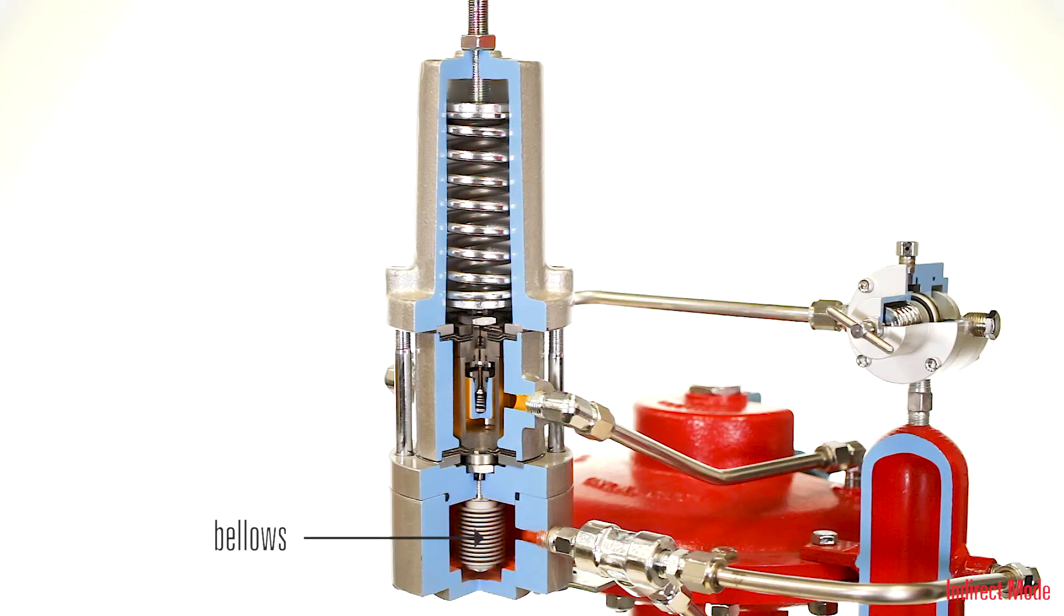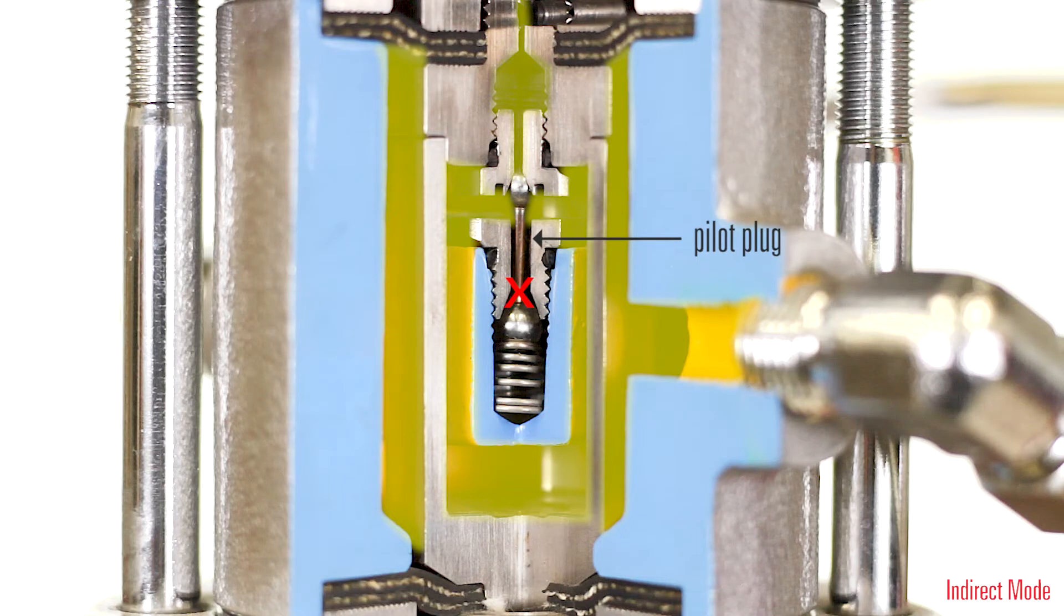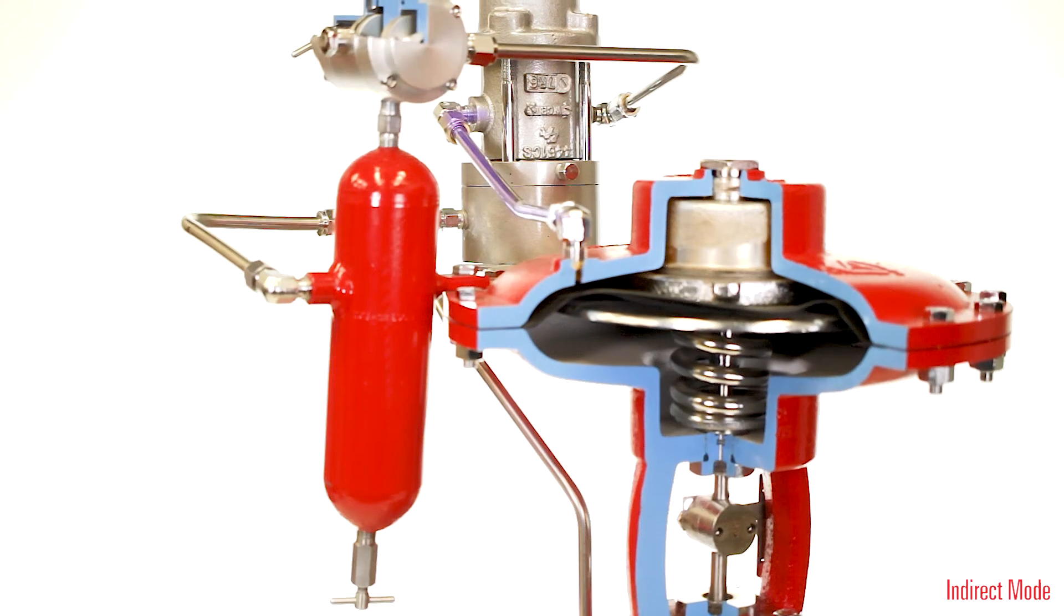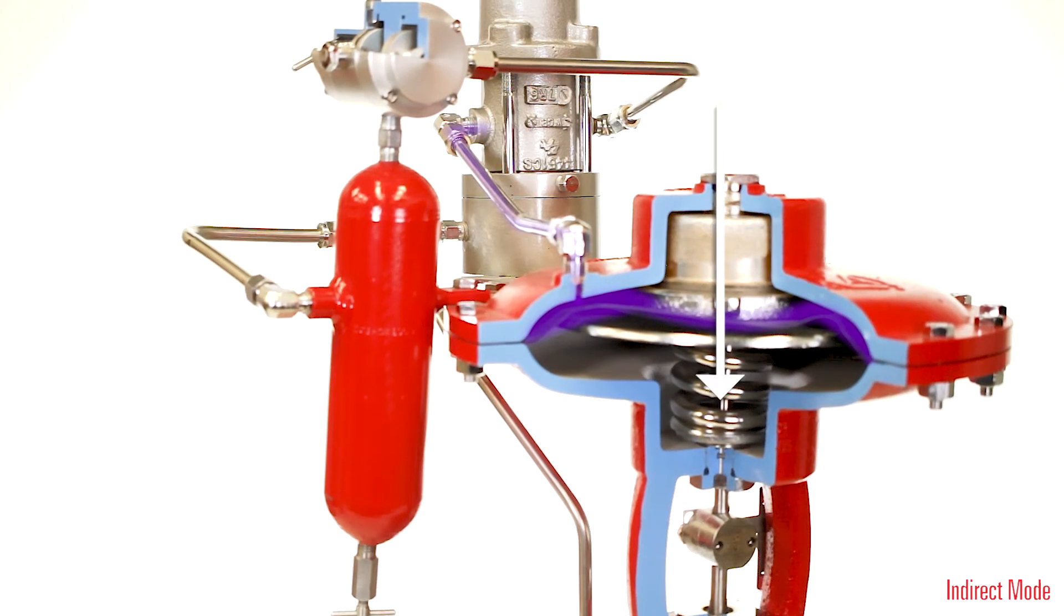A decrease in sense pressure allows the spring to push down on the bellows, which repositions the pilot plug assembly, closing the vent port and opening the supply port to output. This will position the valve toward close.